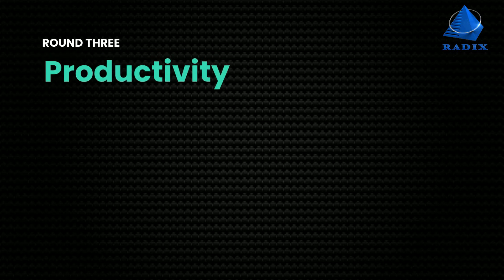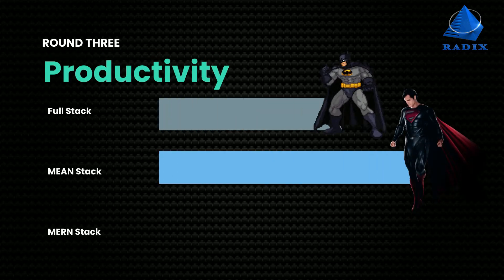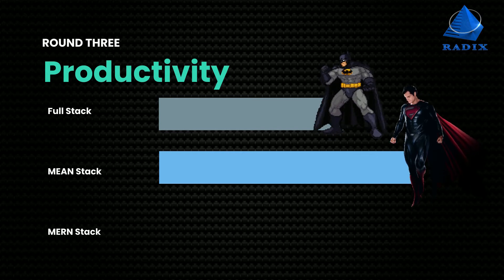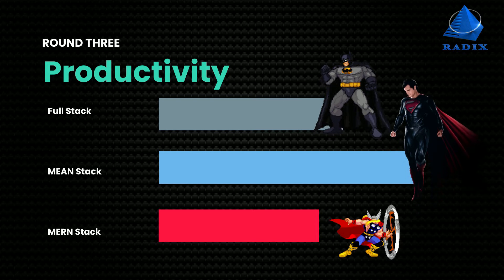3. Productivity. Productivity levels are high with Fullstack. Meanstack also supports better productivity levels. Due to its complexity, the Mernstack supports low productivity levels.